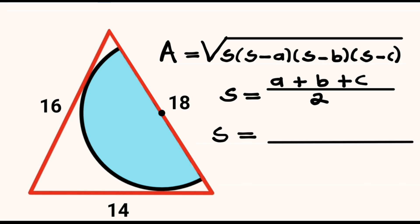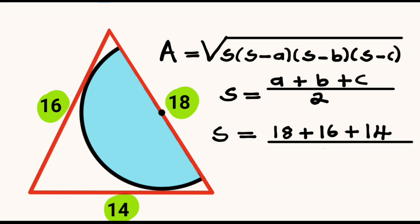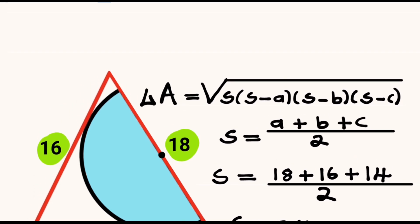So our S will be equal to A which is 18, plus B which is 16, plus C which is 14, divided by 2. Our S will be equal to 18 plus 16 plus 14, which is equal to 48 divided by 2, which is equal to 24.